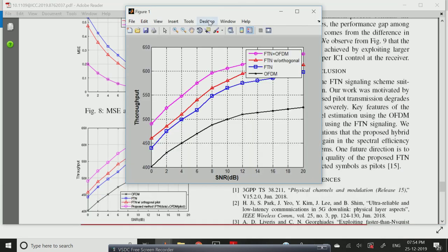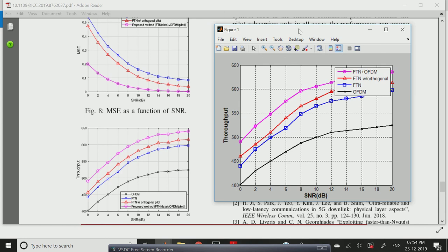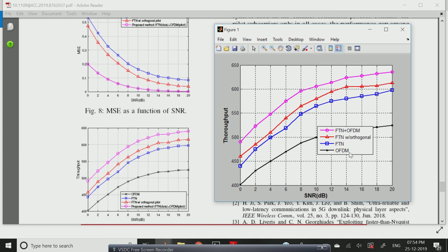The next output is signal-to-noise ratio with throughput. Throughput is the gain of the output. Here we calculated OFDM process, FTN without orthogonal process, and FTN plus OFDM. Here the throughput is maximum with the pink or magenta color. Here we used FTN technique plus OFDM technique. When compared to black color line, blue color line, and red color line, they have less throughput, but our proposed FTN plus OFDM technique has better throughput.